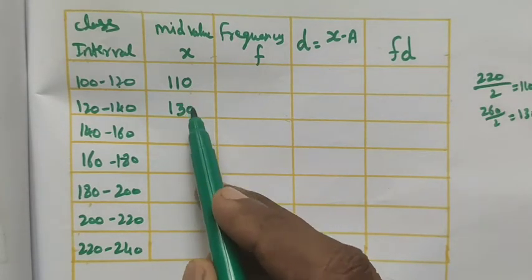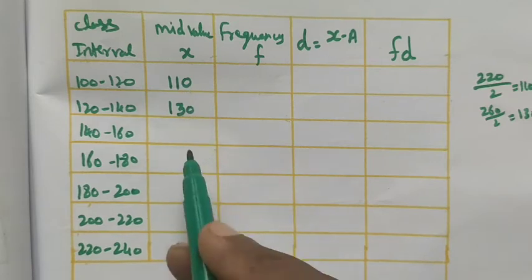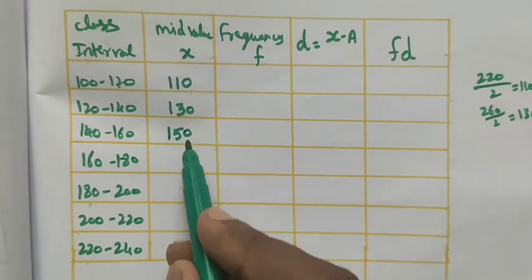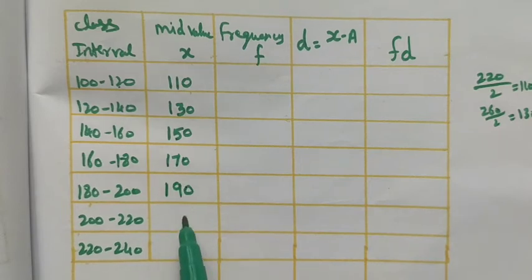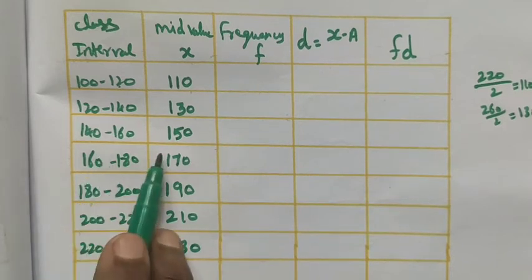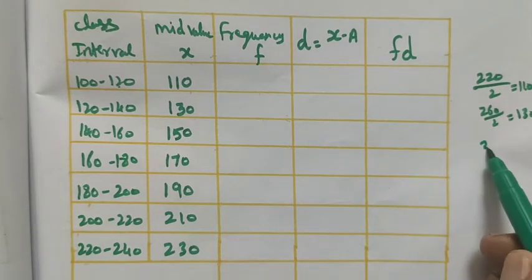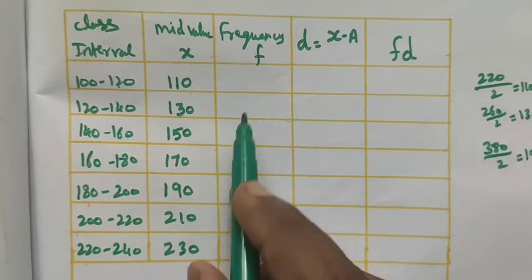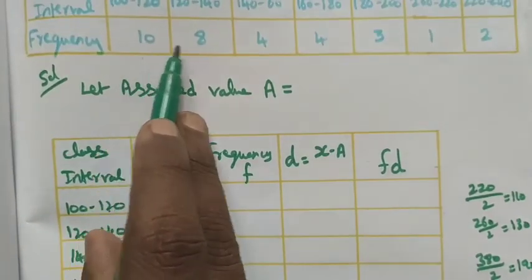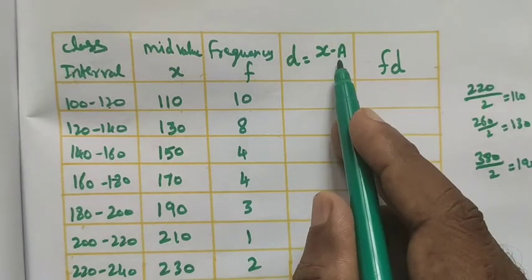The difference between consecutive mid-values is 130 - 110 = 20, so we keep adding 20: 110, 130, 150, 170, 190, 210, 230. We can cross-check: 180 + 200 = 380, divided by 2 = 190. Then enter the frequencies from the table: 10, 8, 4, 4, 3, 1, 2.